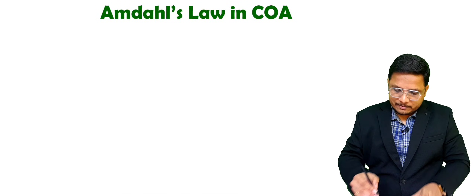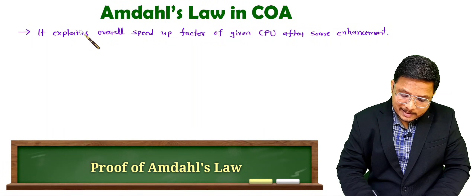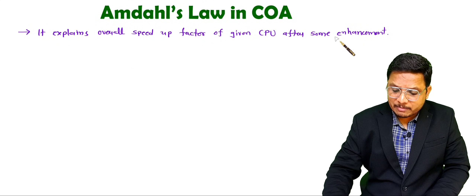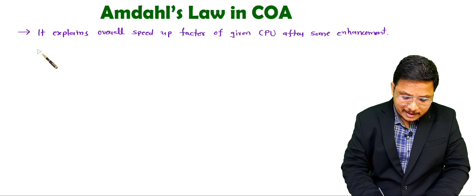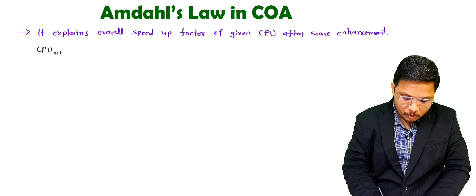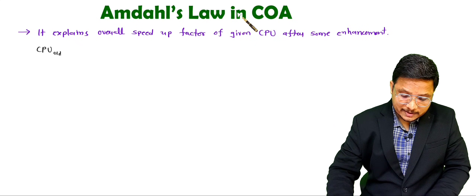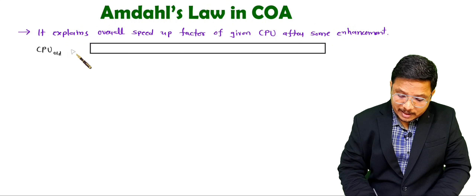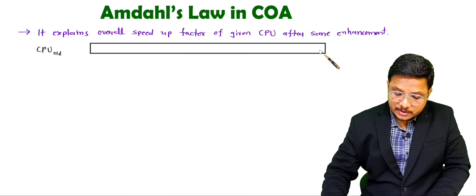Amdahl's law explains how the overall speed factor of a CPU will be after enhancement. To understand that, let us consider one CPU — right now it is in its old condition — and I am going to explain the instruction set.